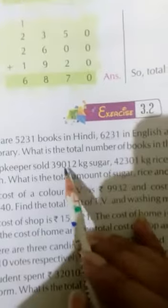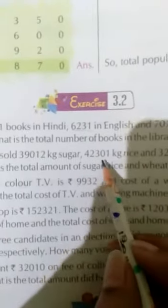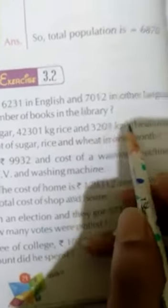Now let's discuss the second one. A shopkeeper sold 39,012 kg sugar. How much? 39,012 kg sugar he sold, 42,301 kg rice, and 3,201 kg wheat.